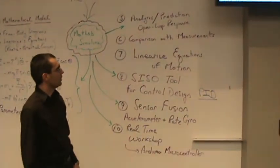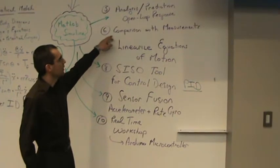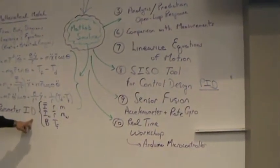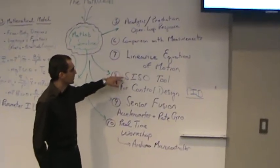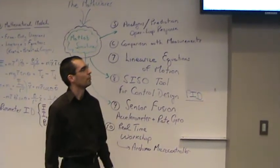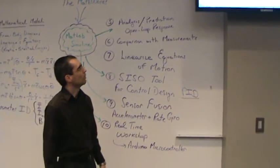From there, we need to make some comparison with measurements to define the right parameters for the system. Then we linearize the equations and use a SISO tool, or we can also use auto-tuning to define the control of the system.